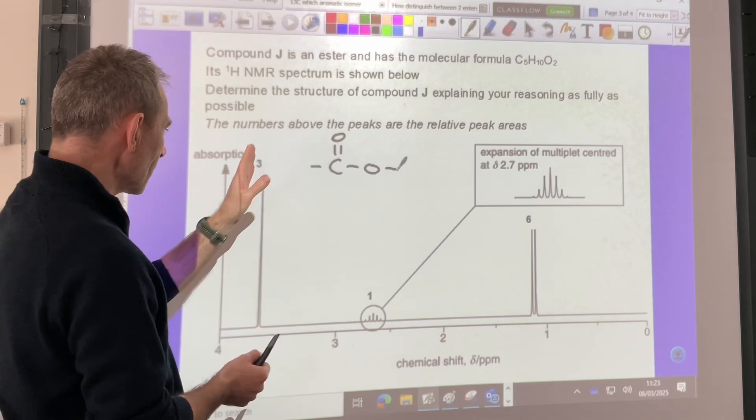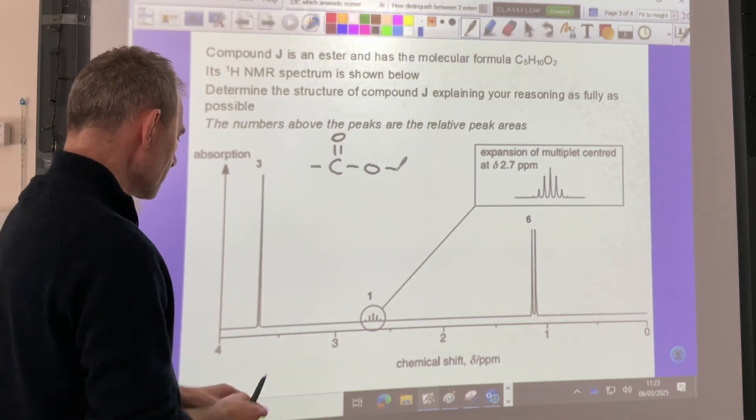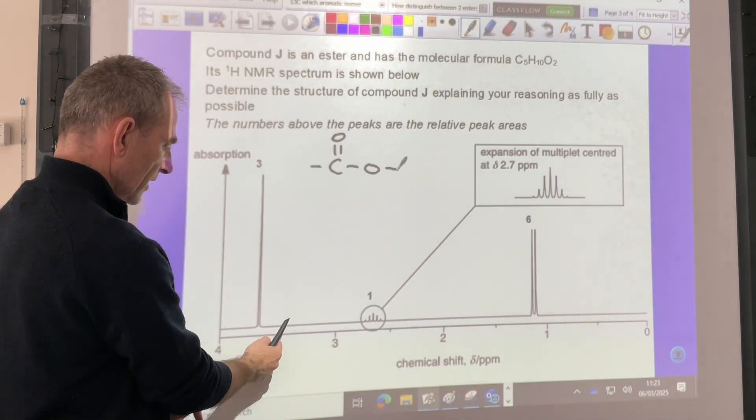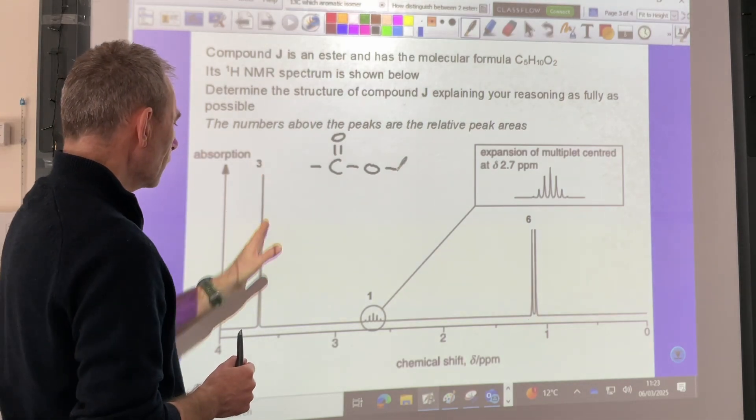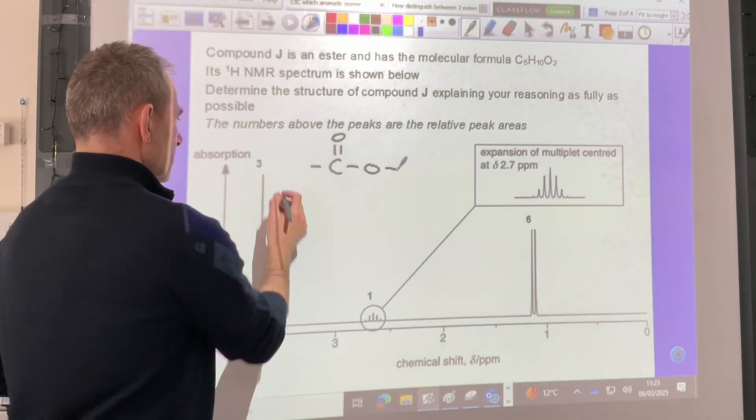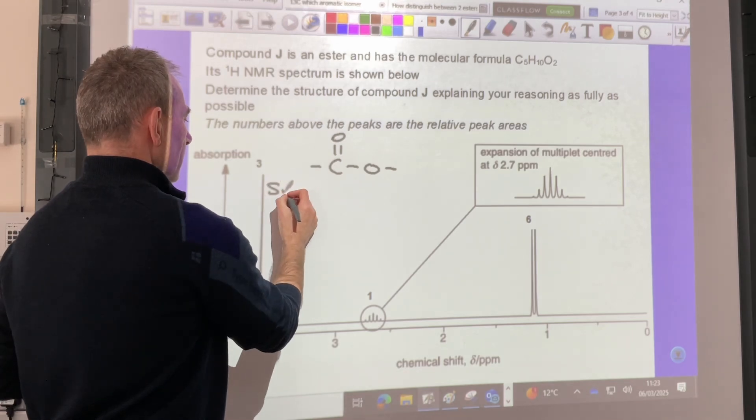So the first signal here, this is about 3.5, 3.67, 3.7. What is it? It's a singlet, so I'm literally just going to write singlet next to that peak.